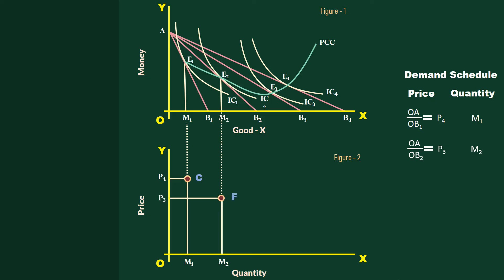Similarly, at equilibrium points E3 and E4, the consumer respectively buys M3 and M4 units of Good X.